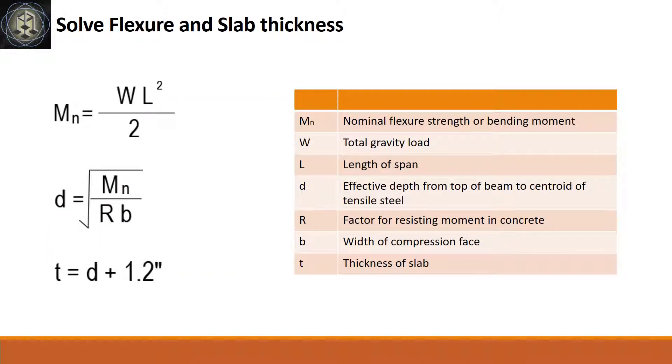Based on the input parameters, balanced section properties, and the total design load, solve the following: M, bending moment; D, effective depth of section; and T, overall slab thickness.